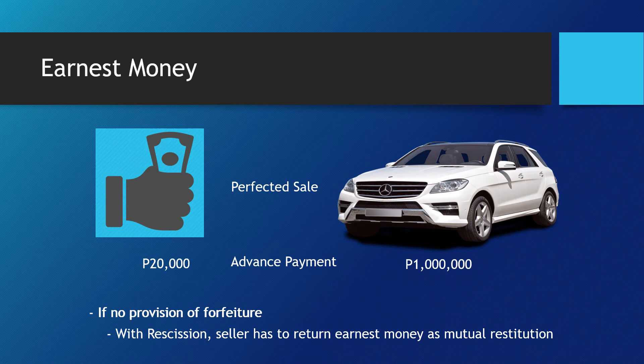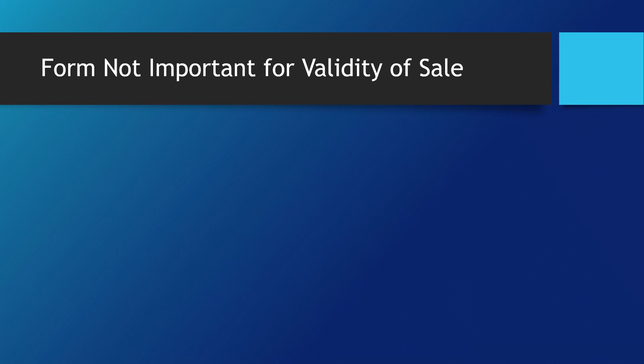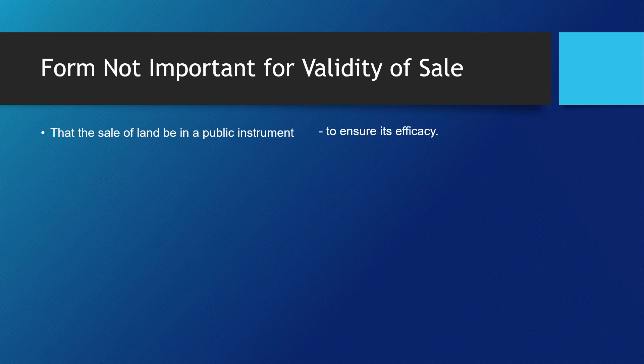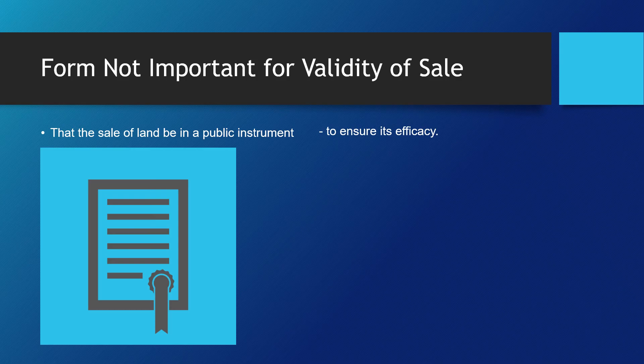Because of its consensual character, form is not important for the validity of sale. The law does not require that the sale of land be in a public instrument or notarized deed in order to validate the contract, but only to ensure its efficacy. So the sale of land under private instrument is still enforceable between the parties. A notarized deed of sale does not guarantee the validity of sale; it merely enjoys the presumption of regularity and due execution. To overthrow this presumption, sufficient clear and convincing evidence is required. Otherwise, the document should be upheld.